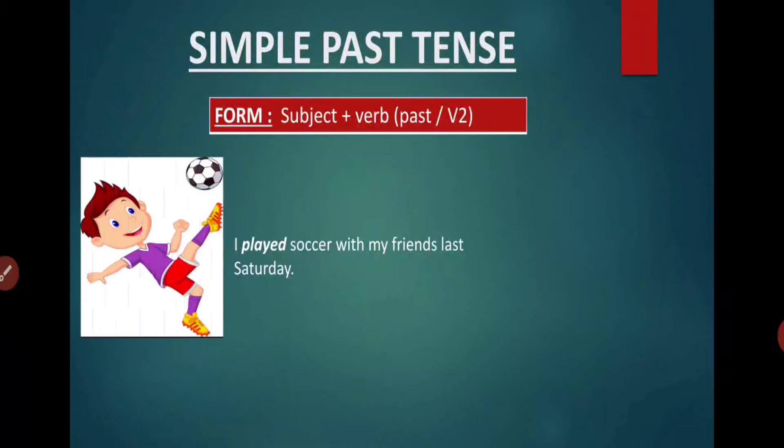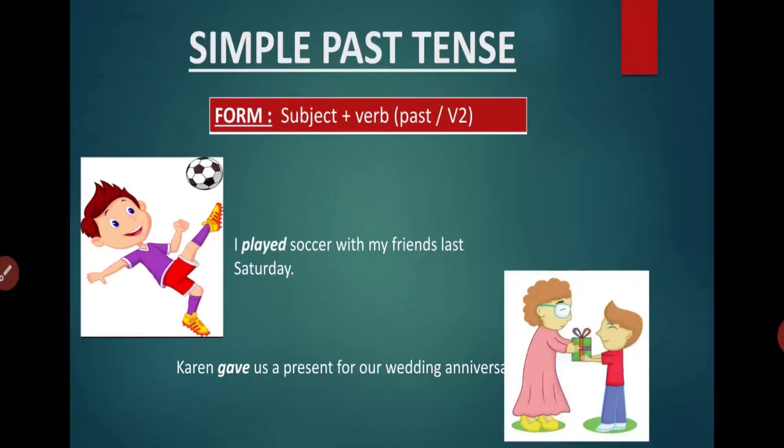Means last Saturday I played soccer with my friends. It has already took place, right? Next example. Karen gave us a present for a wedding anniversary. Karen gave us. It's not give. Gave us. So gave again is a second form of verb, and is also known as past form of verb.